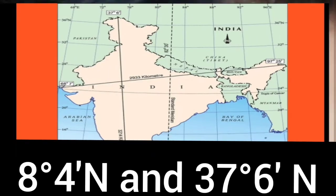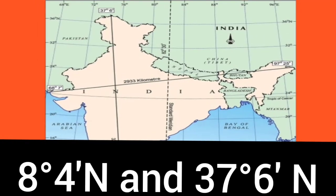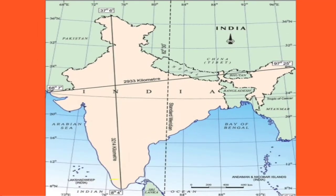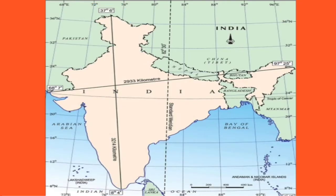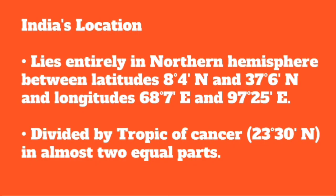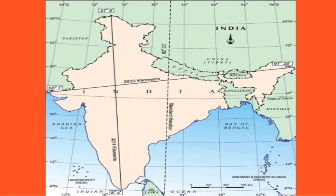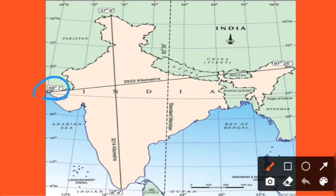So 8 degrees 4 minutes north — here you can see — and 37 degrees 6 minutes north, so it is in the northern hemisphere. And in terms of longitudes, it is between 68 degrees 7 minutes and 97 degrees 25 minutes east.